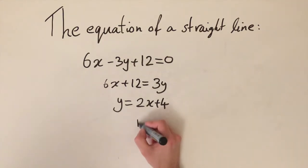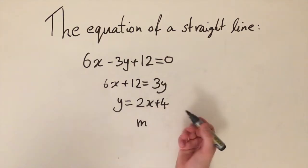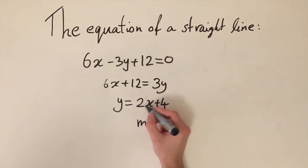So we can now go ahead and just read off what the m and c constants are. So m is the x coefficient, this is the gradient. And the plus 4 is the y-intercept.